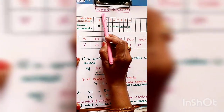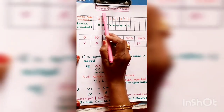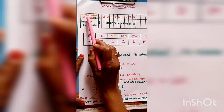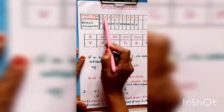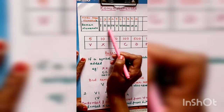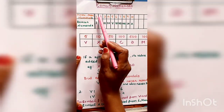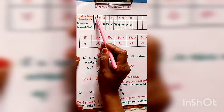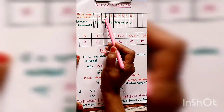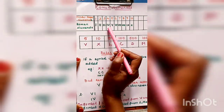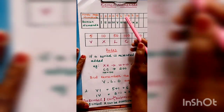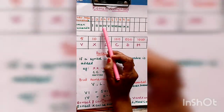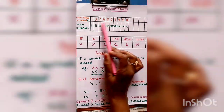Now we will revisit Roman numerals. You have already studied Roman numerals in smaller classes. I have shown a table of Hindu-Arabic numerals and Roman numerals. One is I, two is II, three is III, four is IV, five is V, six is VI, seven is VII, eight is VIII, nine is IX, ten is X.